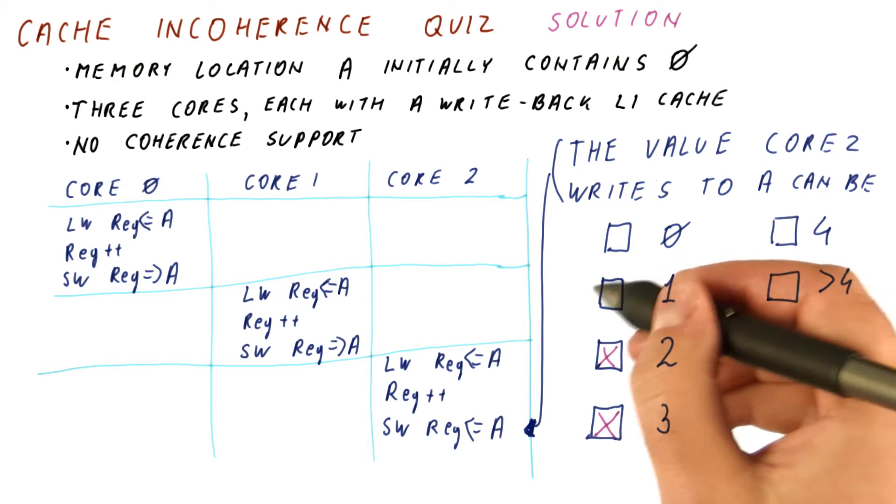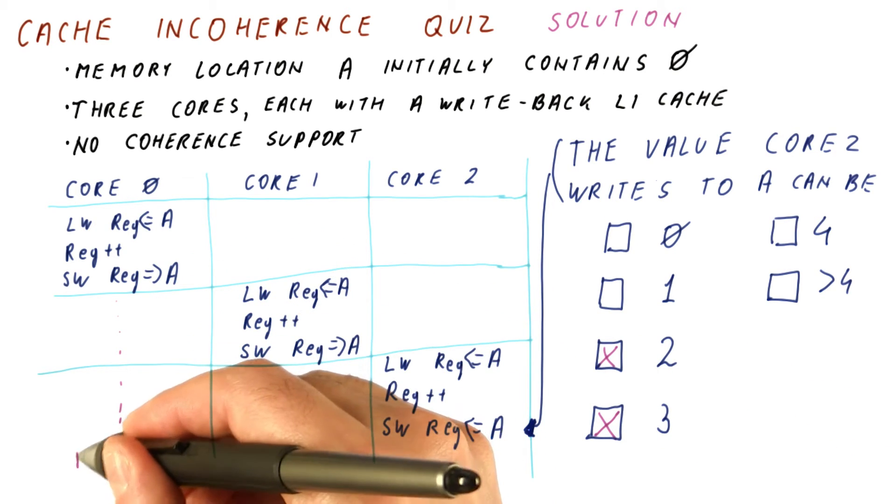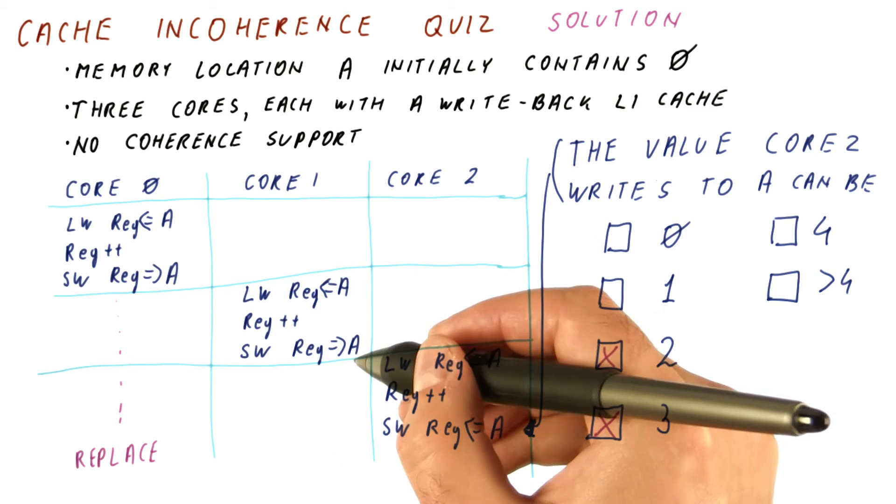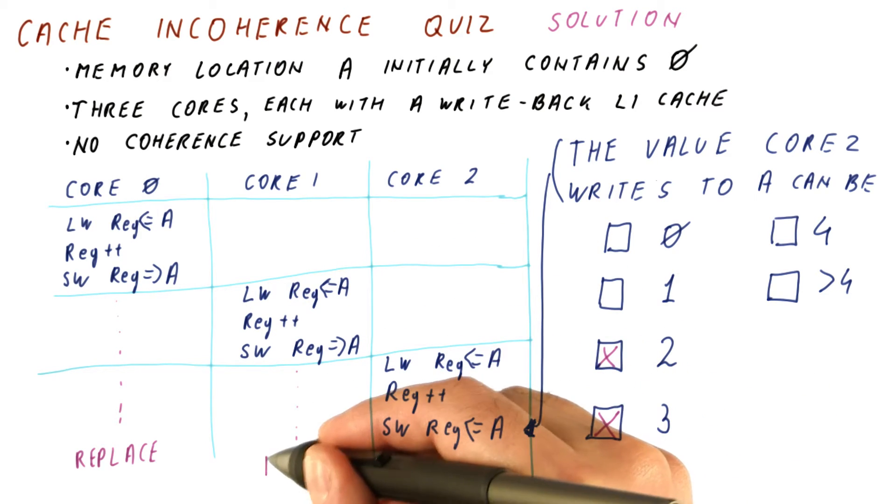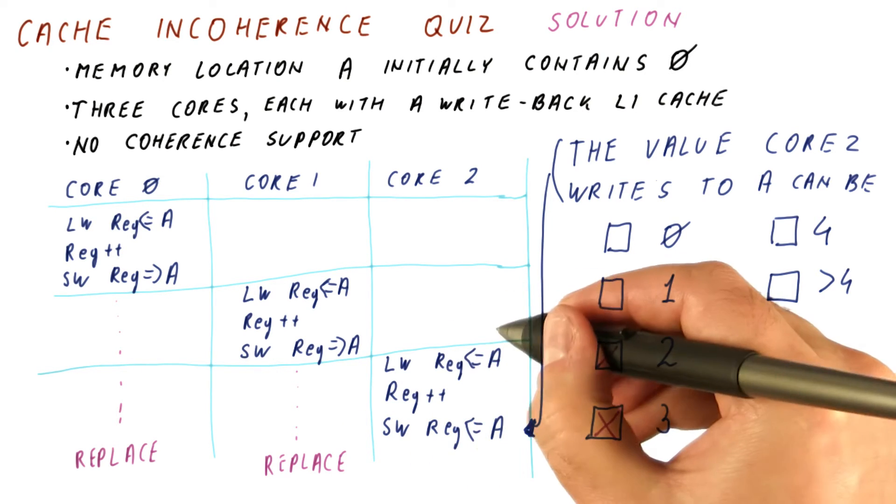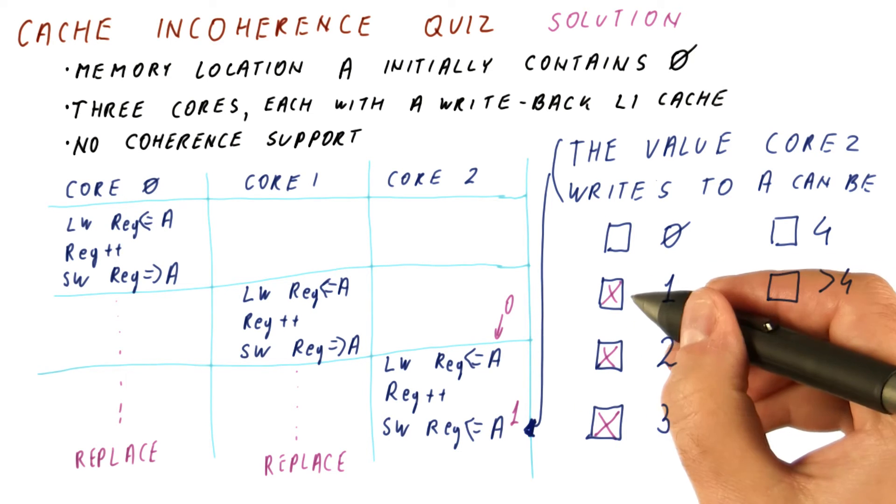And then we can get a 1 here, by basically core 0 delaying the replacement. And then core 1 can fetch a 0 as well, put a 1 there, but not replace until later. And that means that when core 2 reads this, it gets a 0, and then puts a 1 here. So this is also possible.